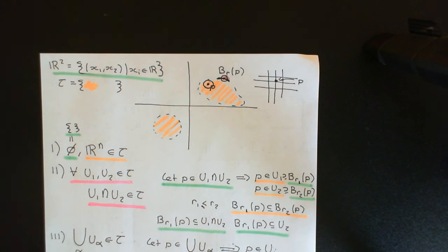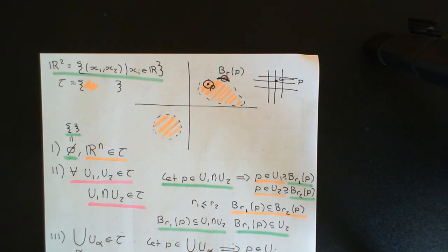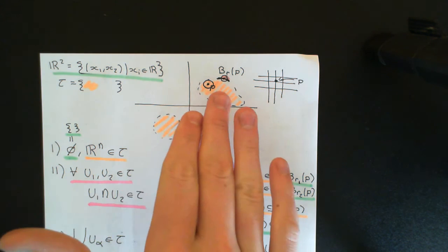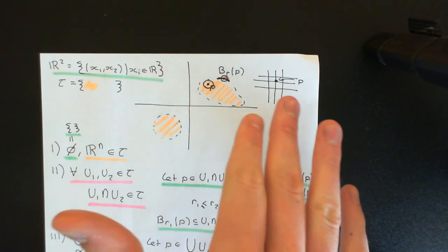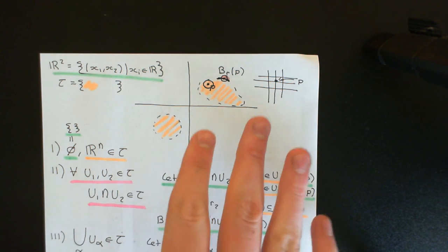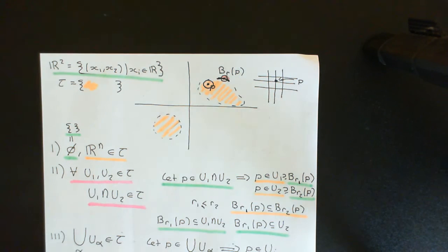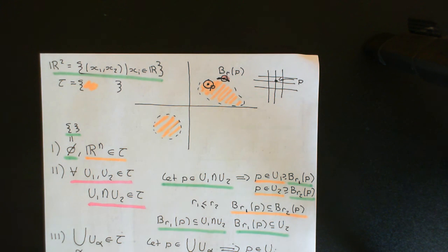We'll end there. In the next video, we'll go on to defining the concept of a continuous function between two topological spaces. We will see how this informal intuition for what a topological space has defined on it — this notion of having little connections between the points in the topological space — really helps us to motivate the definition of continuity. Although this isn't rigorous, it is a really helpful informal intuition to have of what a topological space actually is: that it's a set with little connections between points in that set.